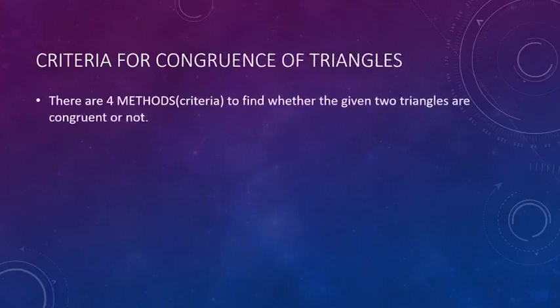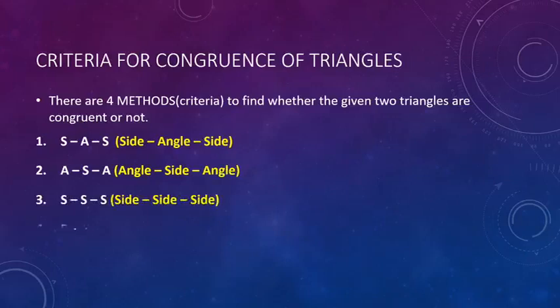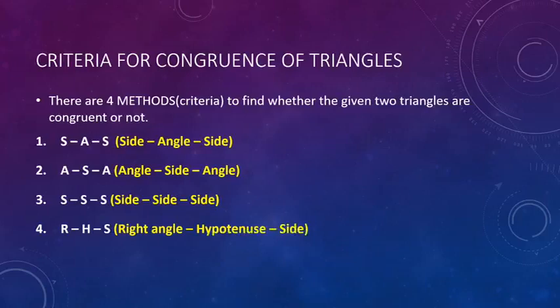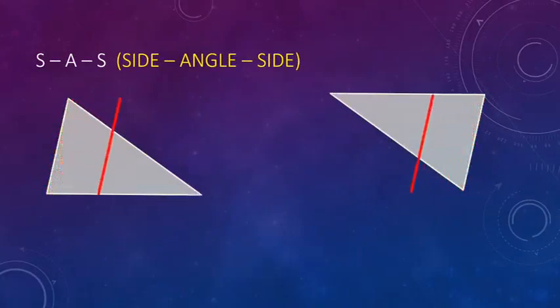Now there are different criteria for proving the congruency of triangles. We can find out if two triangles are congruent or not using the following four methods. First one is SAS, that is Side-Angle-Side. Second is ASA, Angle-Side-Angle. Third one is SSS, Side-Side-Side. And the last one is RHS, that is Right angle-Hypotenuse-Side. Let us discuss them one by one.